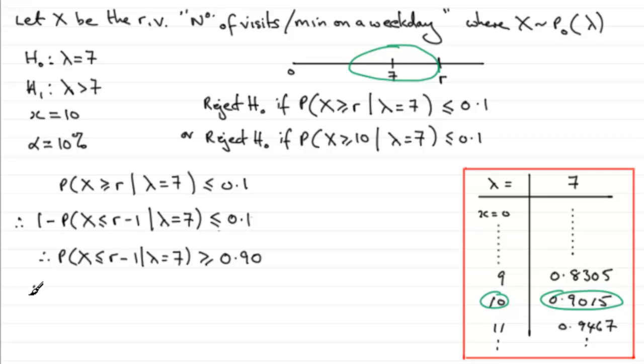So, we can say that therefore from tables, R minus 1 must be the 10. So it follows from this, that if we add 1 to both sides, R must equal 11. That critical value is 11.